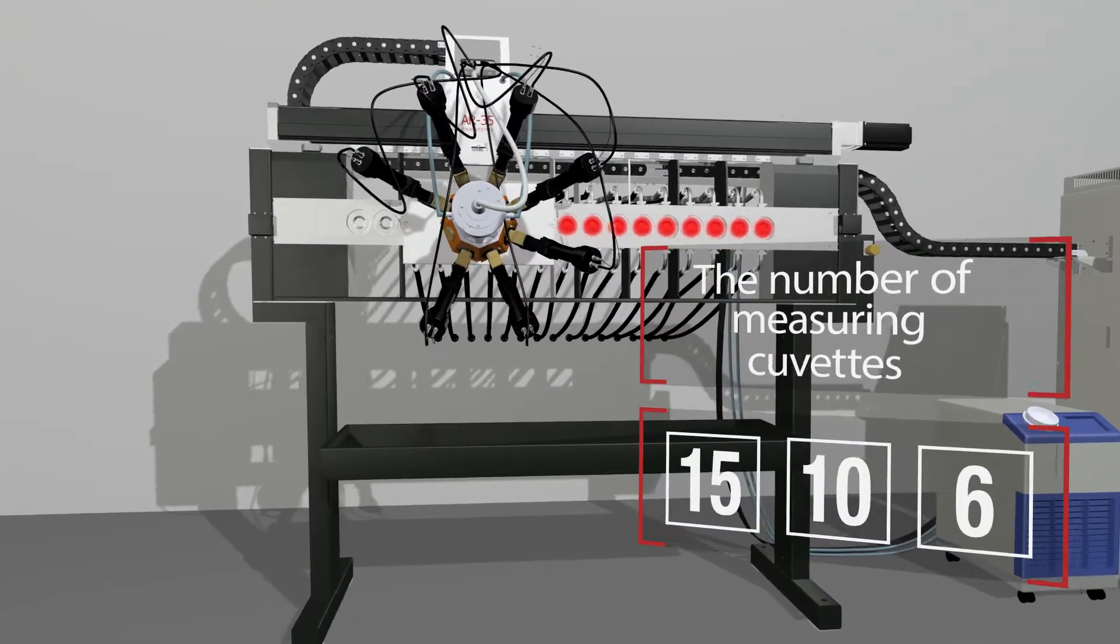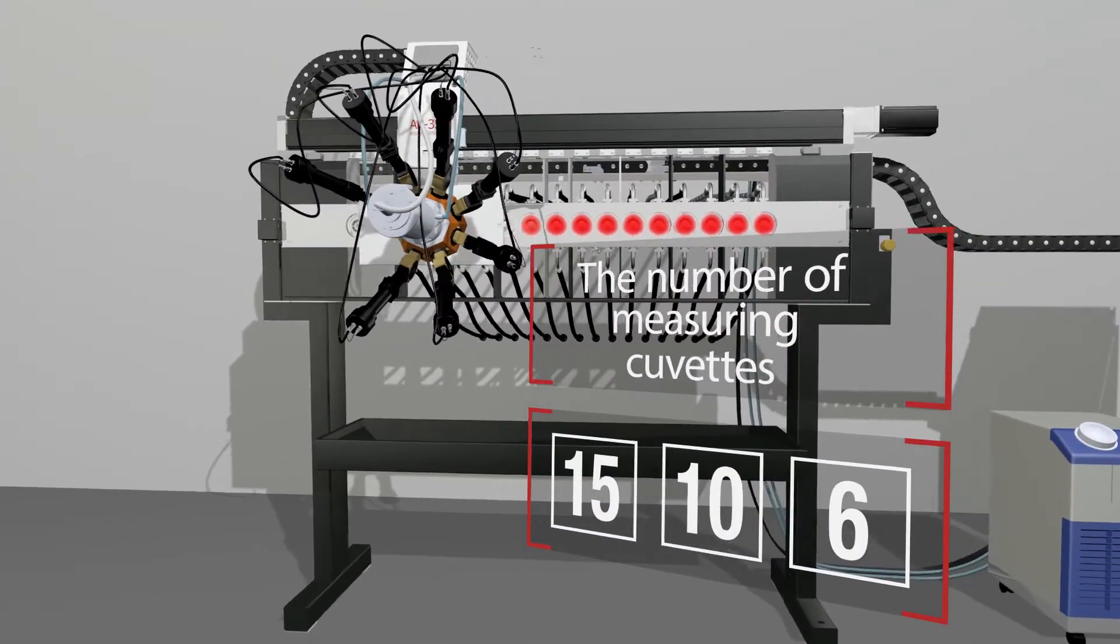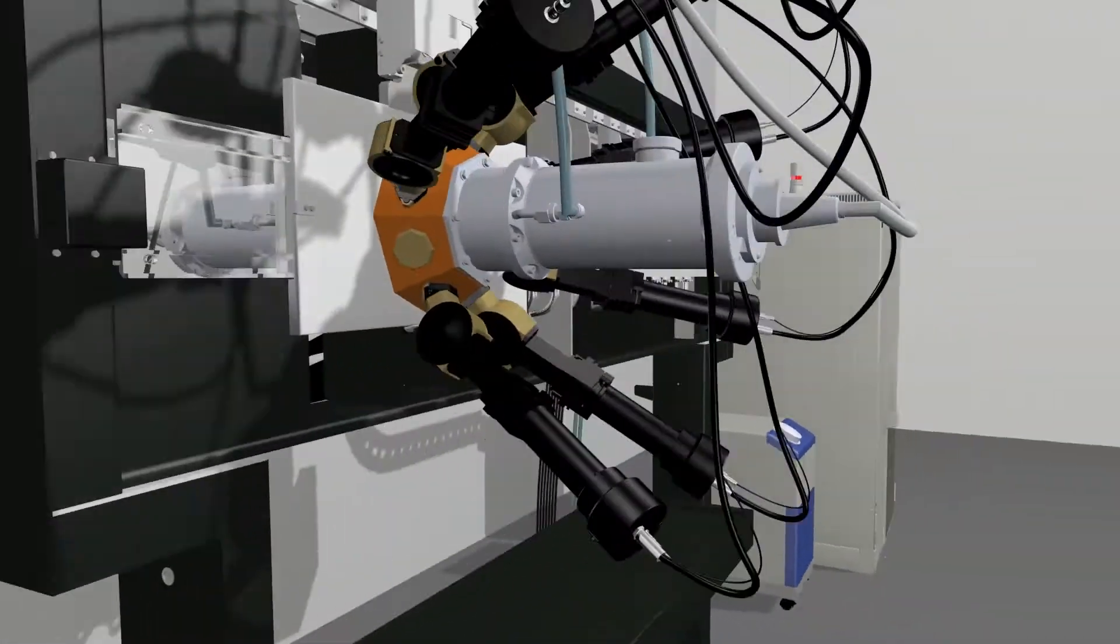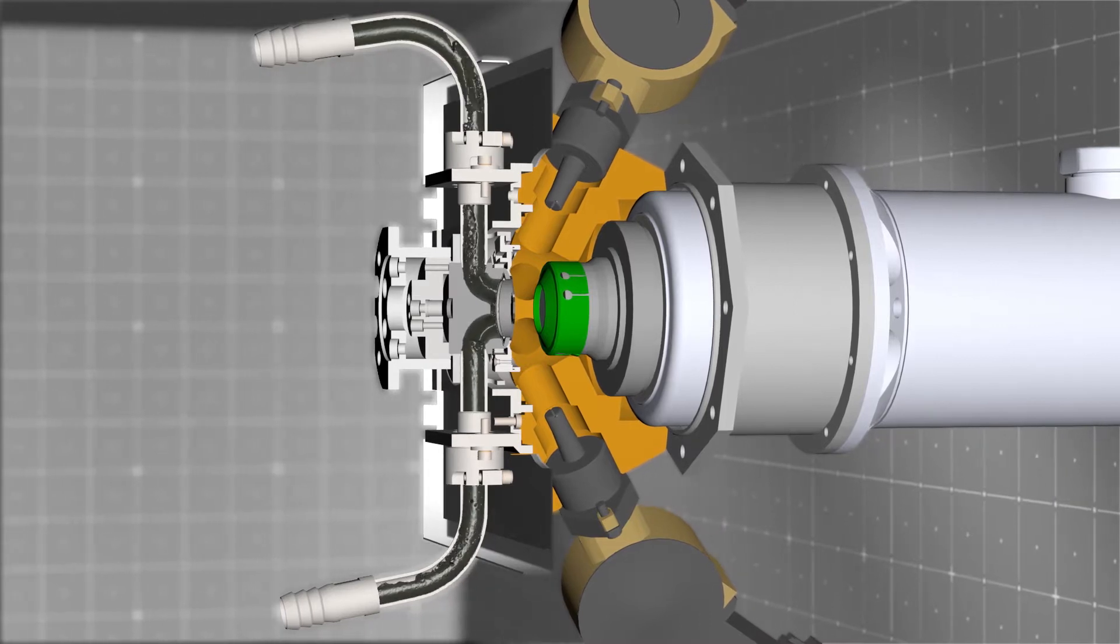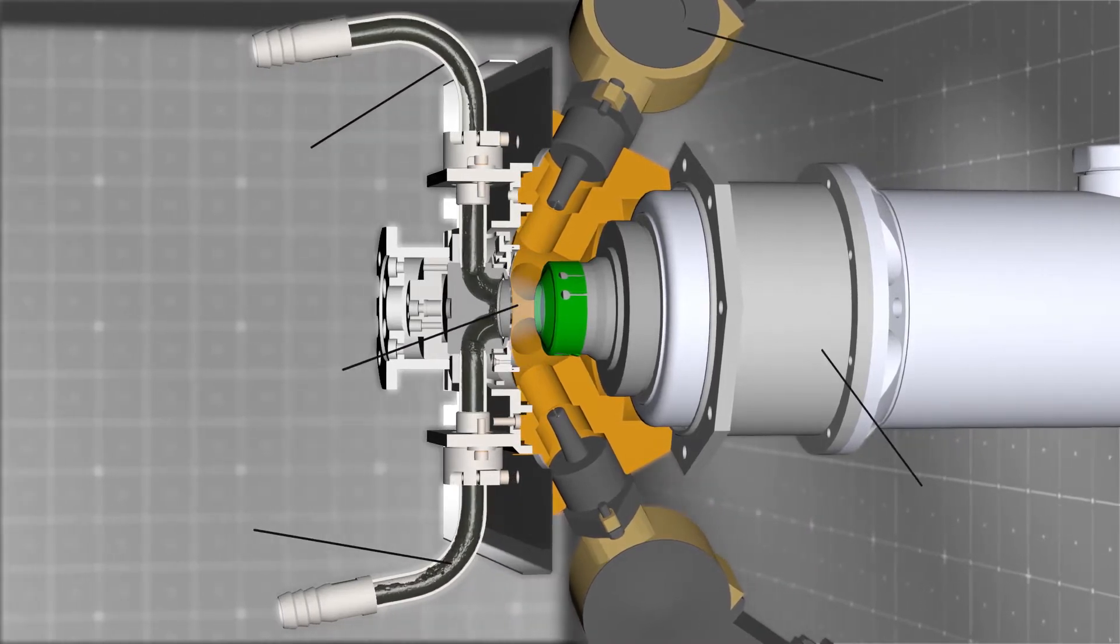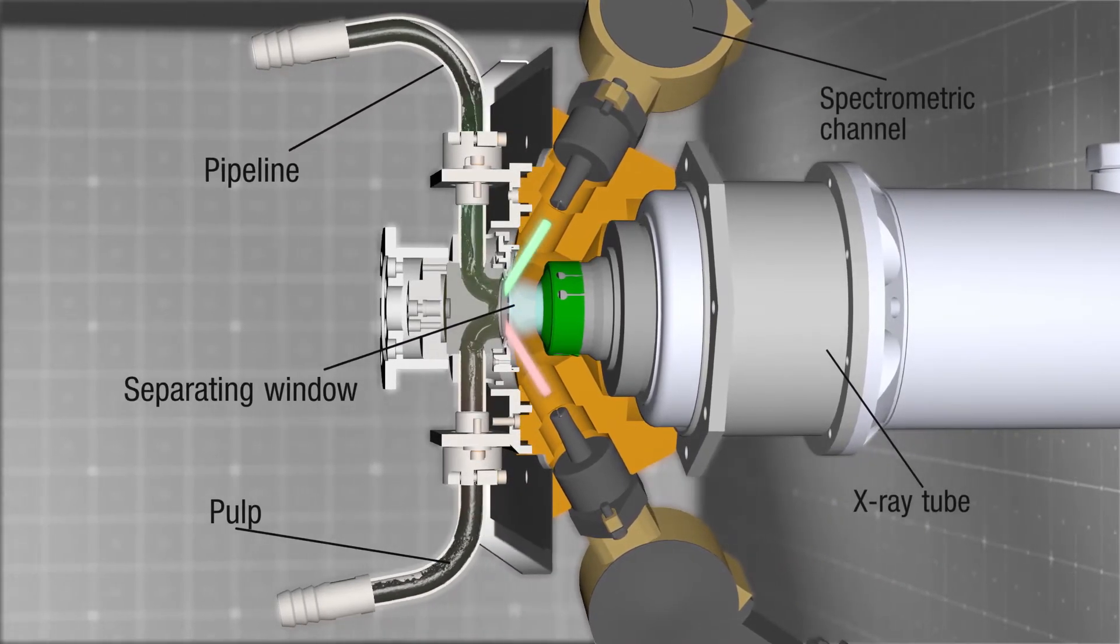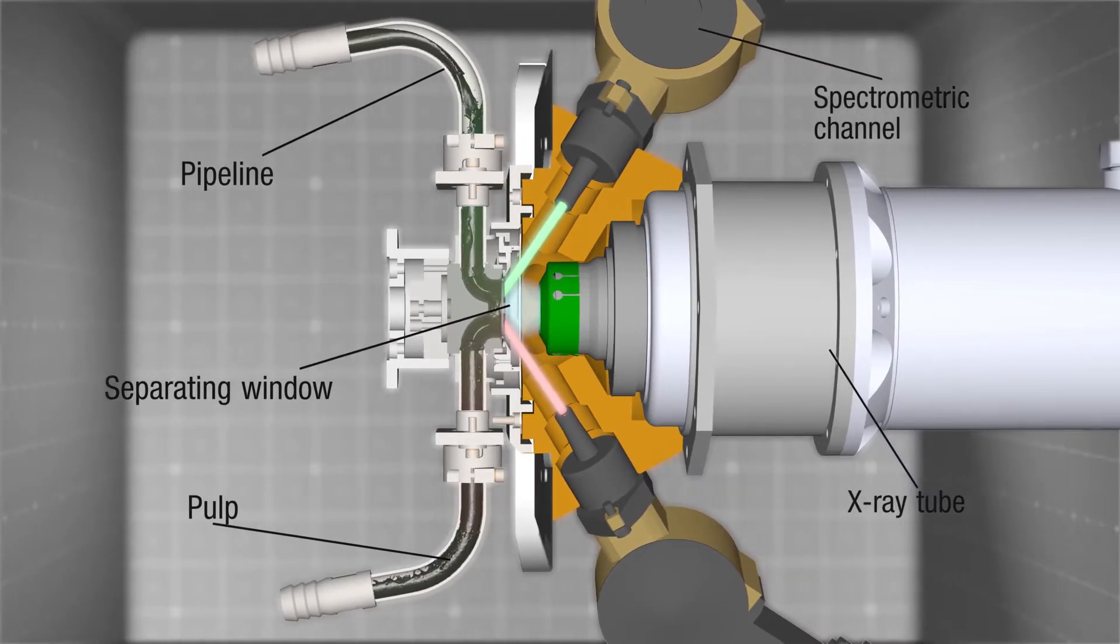The operational principle of the analyzer is Johannesson's high aperture x-ray optical scheme, which provides high spectral resolution, excluding analytical lines of the chemical elements' mutual overlaps and determining high sensitivity of x-ray analysis.